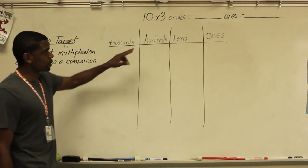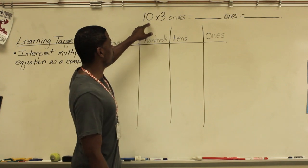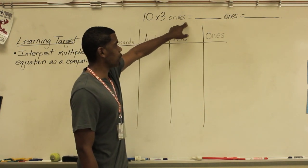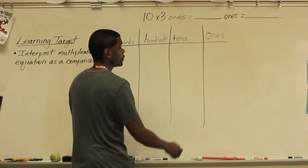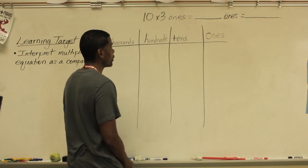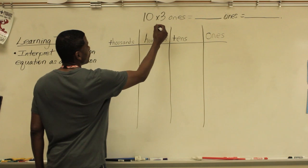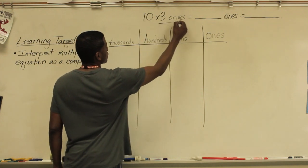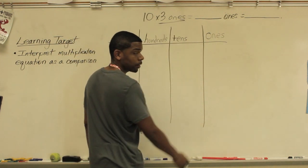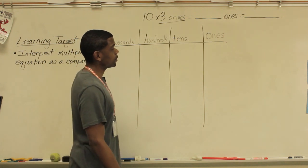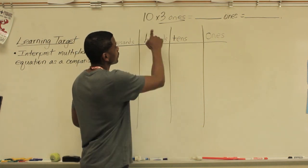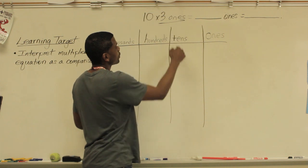Here is our problem. We're trying to find out what is ten times three ones equals blank ones equals blank. So what we have here is three ones. Today we talked about disk and units, so we're going to talk about ten times three ones.